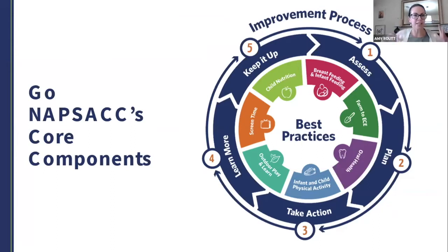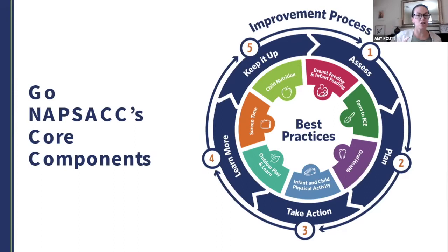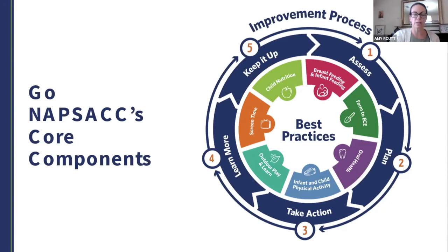After you've assessed, you look at areas where you're strong and areas where you have room to grow. You make a plan — choose areas to work on and take action by setting up action plans with goals to reach best practices. There's also a whole library within Go Knapsack with tips, materials, and resources. Then you continue the cycle: once you've completed some goals, you reassess and keep going.